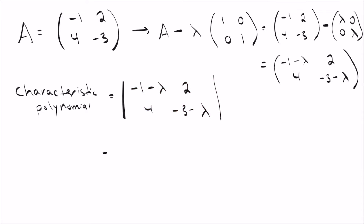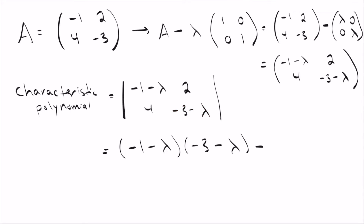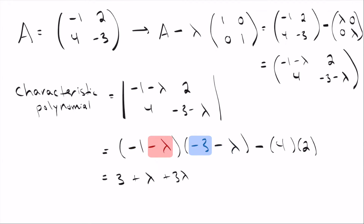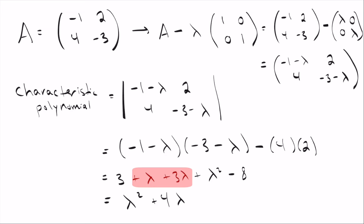To get the characteristic polynomial, you take the determinant of that matrix. For a 2x2 matrix, you take the first entry and multiply it by the other diagonal entry, then subtract the product of the other two terms — so 4 times 2. If you FOIL that out, you get lambda squared plus 4 lambda minus 5.